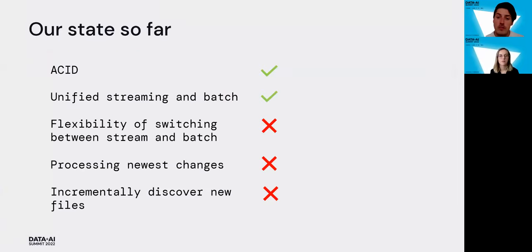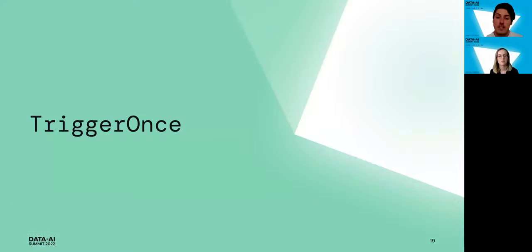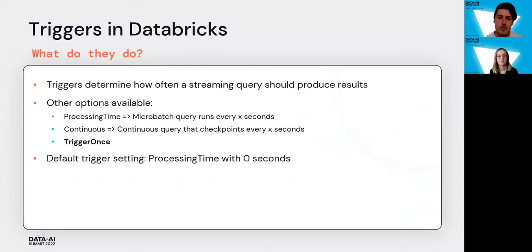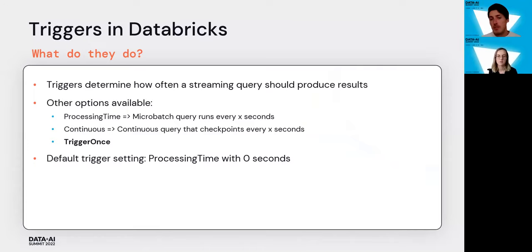We have already tackled the first two items on our journey: ACID transactions and unified streaming and batch, meaning our data can be located in one place. Now let's talk about the trigger once functionality. Triggers in Databricks determine how often a query should produce results — for example, whether you want to check new data every minute, every 10 minutes, or all the time.